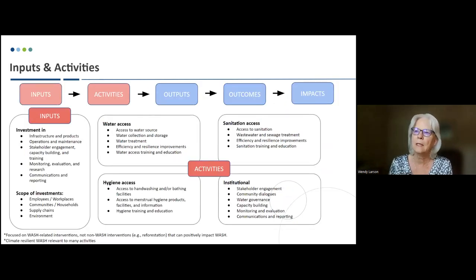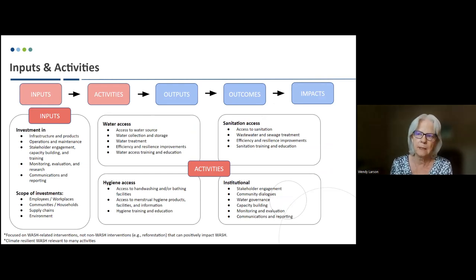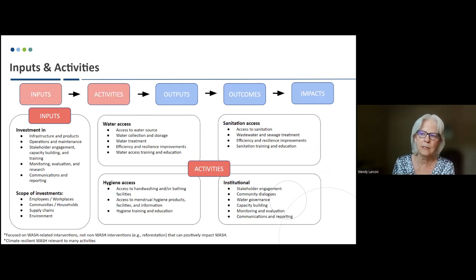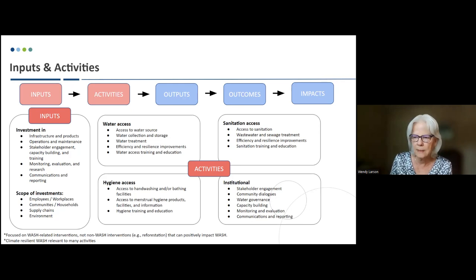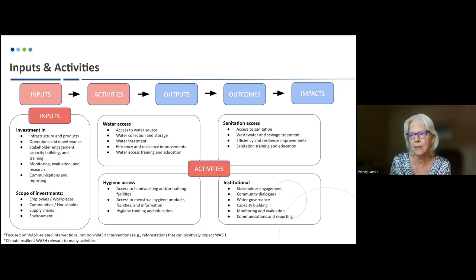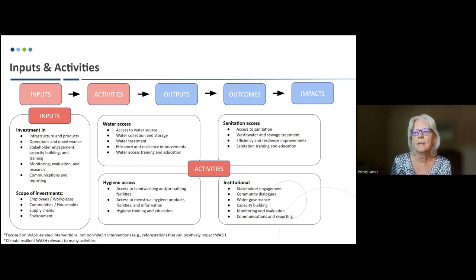This slide shows the first two buckets of the impact pathway: inputs and activities. Inputs may be investments in things like infrastructure, stakeholder engagement, monitoring, and communications. The scope of investments covers employees and workplaces, communities, households, supply chains, and the environment. It's important to note these are focused on WASH-related interventions, not non-WASH interventions such as reforestation upstream in the watershed. Climate-resilient WASH is relevant to many of the activities shown. On the right side, activities are organized by water access, sanitation access, hygiene access, and institutional changes, each with example activities listed.